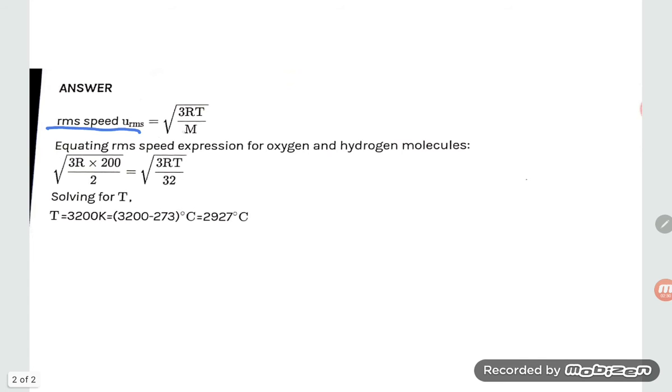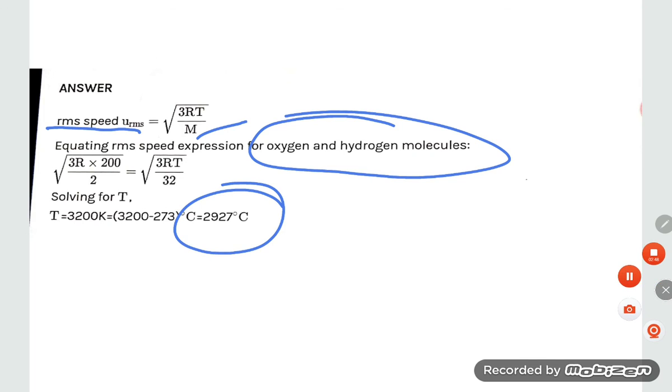RMS speed, URMS is equal to square root 3RT by M. Equating RMS speed expression for oxygen and hydrogen molecules, square root 3R times 200 by 32 equals square root 3RT by 2, so temperature will come 2927. Thank you so much for watching friends.